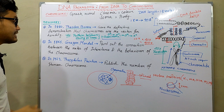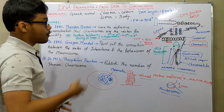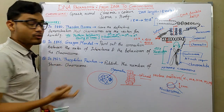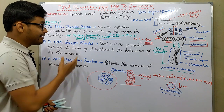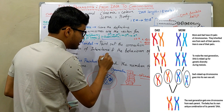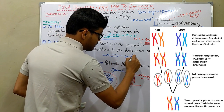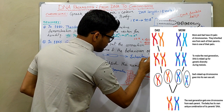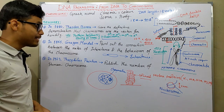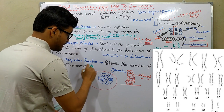In 1865, Gregor Johann Mendel pointed out the connection between the rules of inheritance and the behavior of chromosomes. Mendel first observed that the chromosome is the main part responsible for inheritance. In 1923, Theophilus Painter published the number of human chromosomes, which is 46.